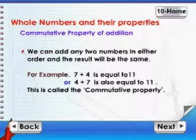Commutative property of addition. We can add any two numbers in either order and the result will be the same. For example, 7 plus 4 is equal to 11. Or, 4 plus 7 is also equal to 11. This is called the commutative property.